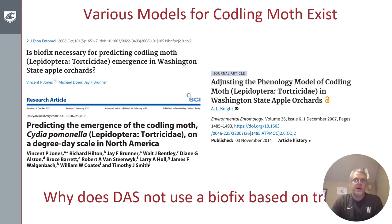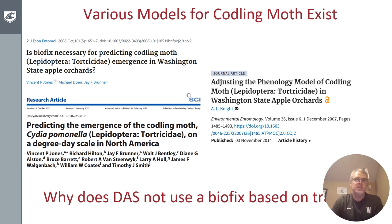Various models for codling moth exist, and I'm showing three publications that each capture different aspects of phenology and come to slightly different conclusions. One of these models, the model of Alan Knight, uses a biofix based on trap catch data to simulate when codling moth have first started emerging in orchards. The other two models do not use a biofix and start accumulating heat units on January 1st, and these are the models used on the decision aid system.